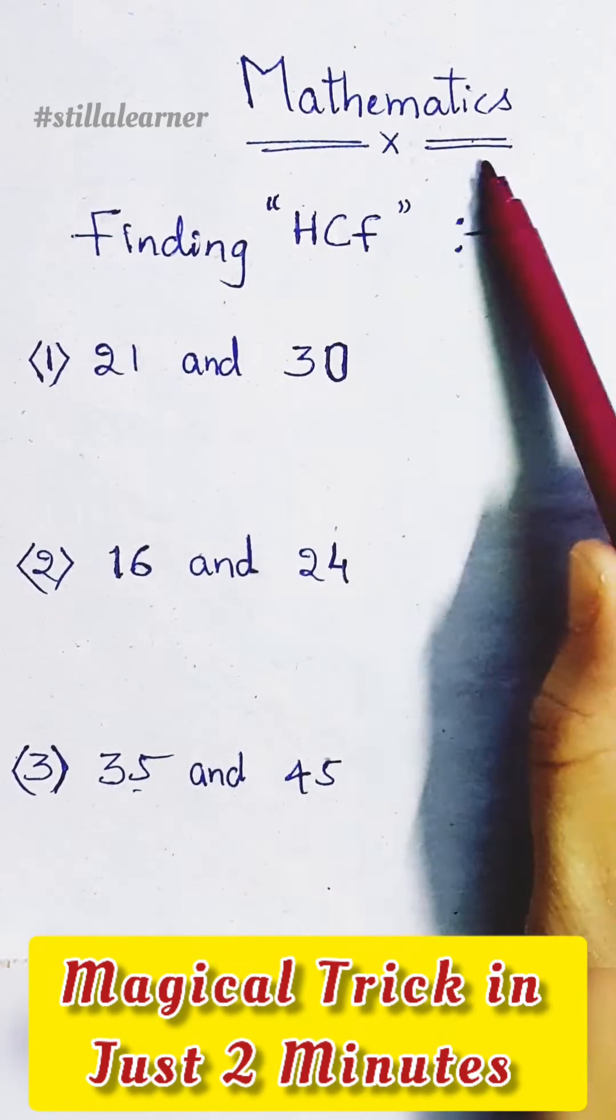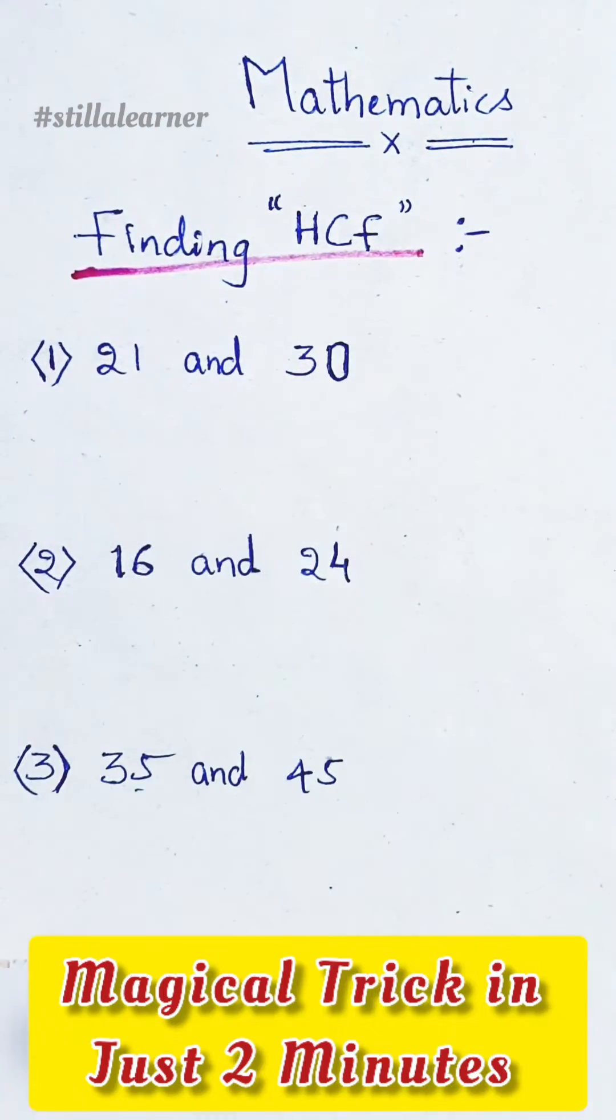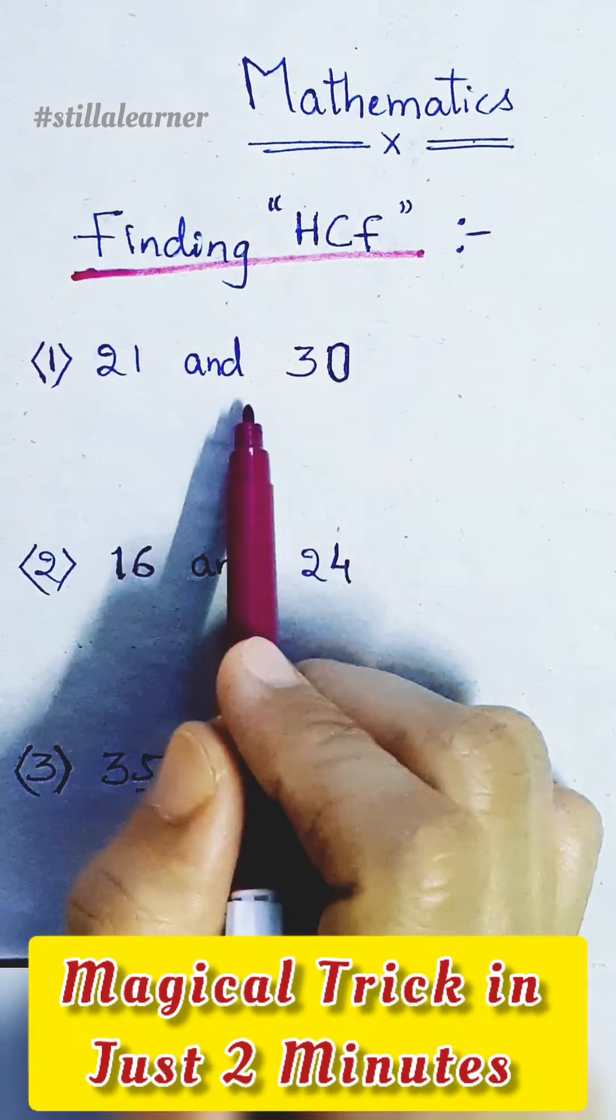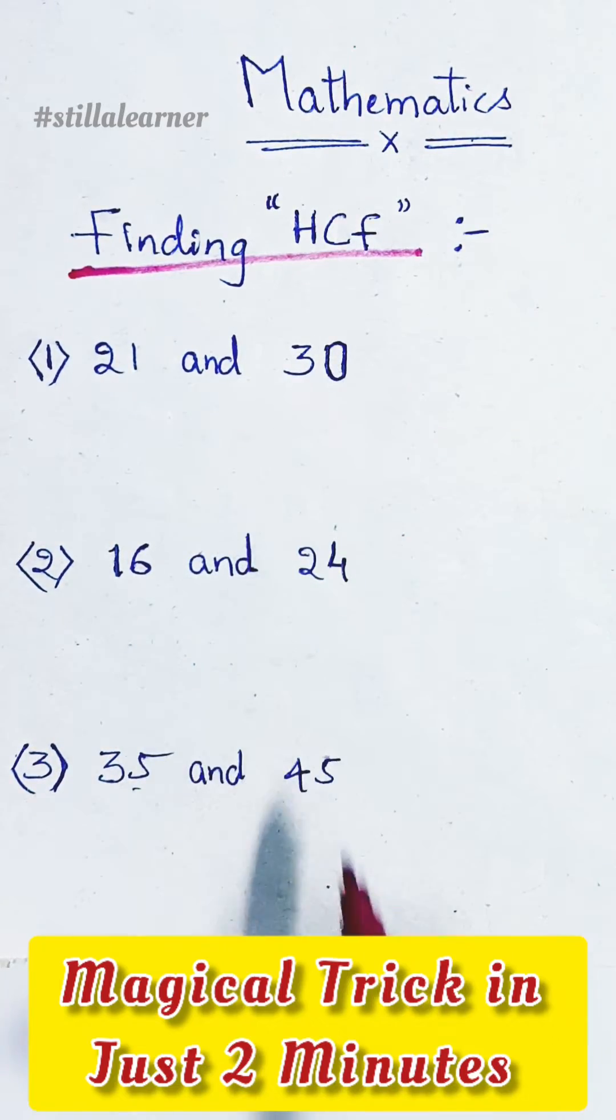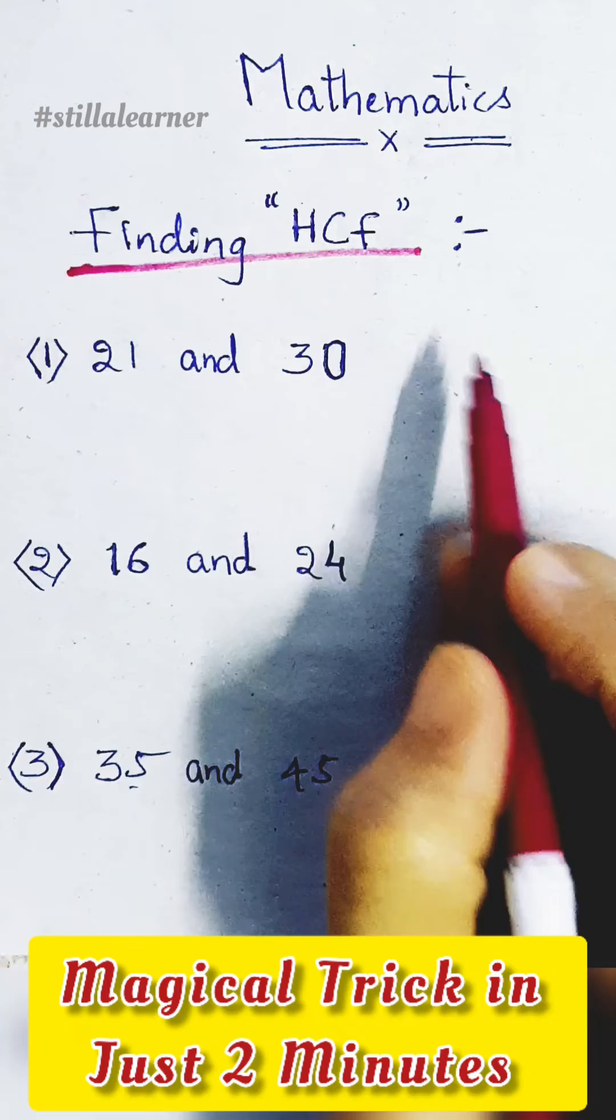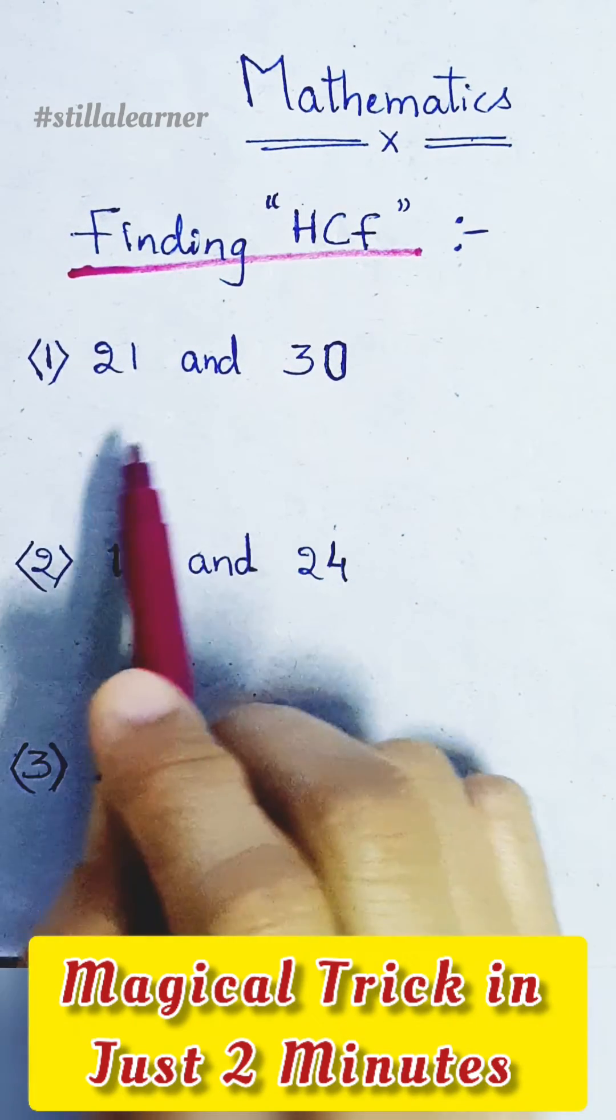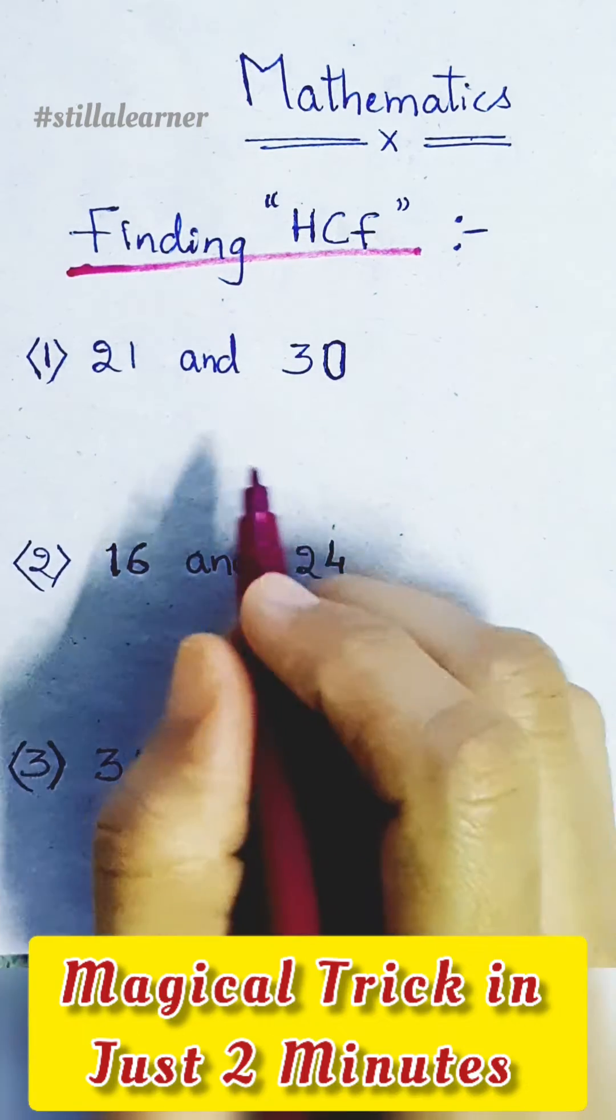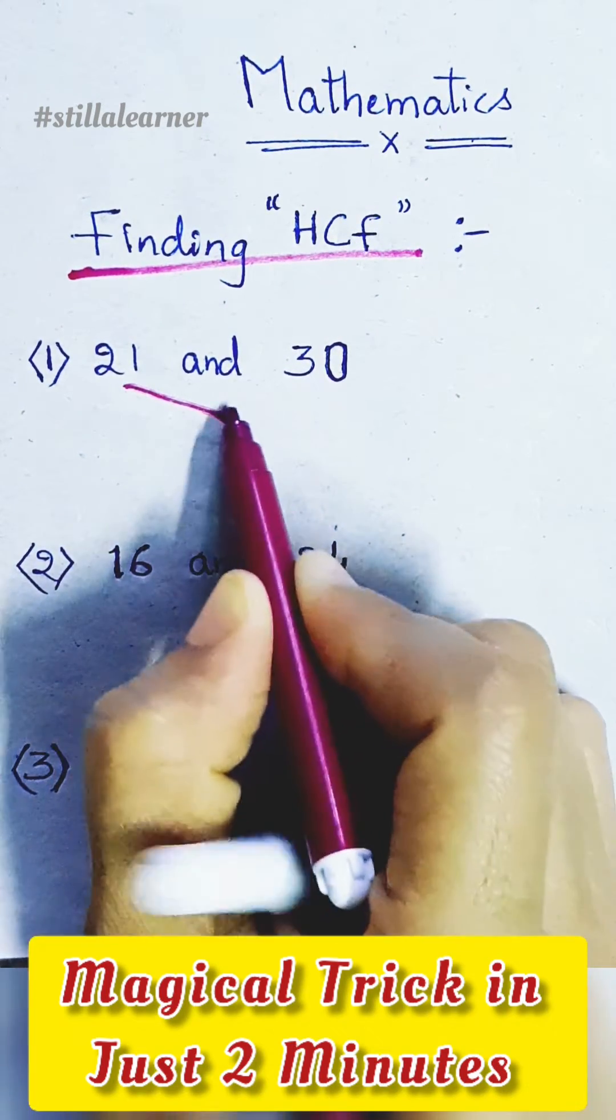Hey, good morning everyone. Today we'll see how to find HCF - highest common factor. We have to find out the HCF of the following numbers. The first one is 21 and 30. To find the HCF of these numbers, first of all we have to find out the factors of these two numbers.